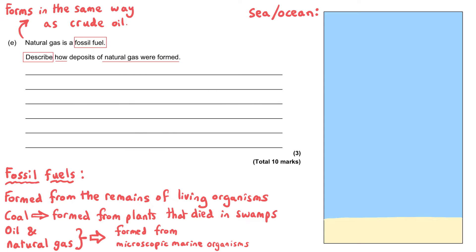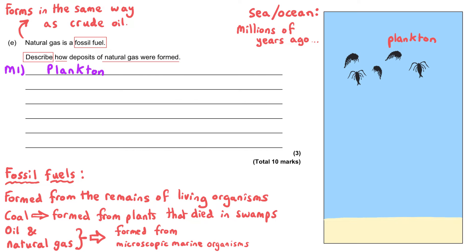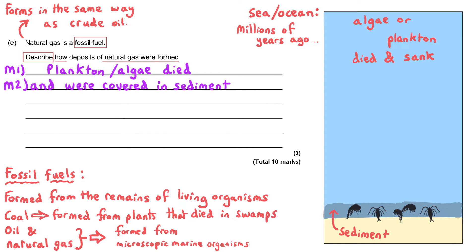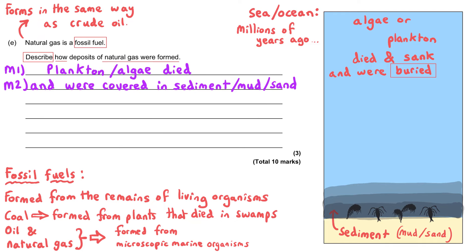So millions of years ago, plankton — tiny microscopic marine organisms — were living in the oceans. You could also say algae for this marking point. Then they died and sank to the bottom of the ocean. Once there, they were covered in sediments — a catch-all word for mud, sand, bits of rock and things like that. The marine organisms were being buried under this sediment, which is the second marking point.